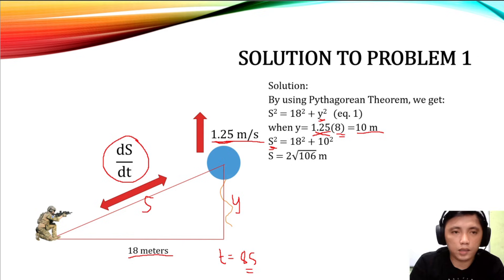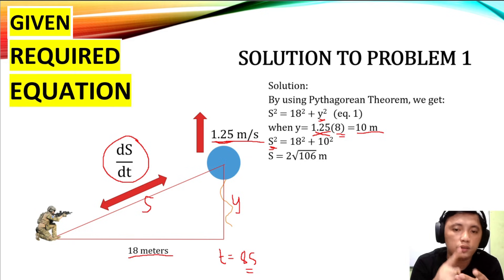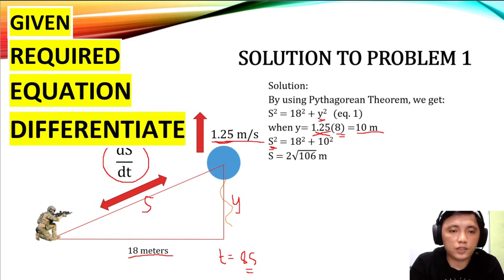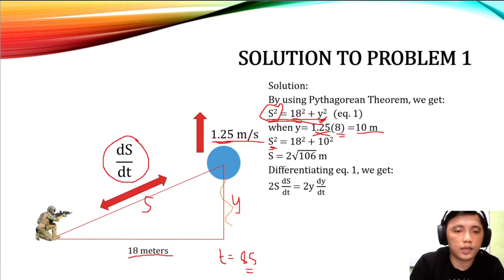The next step is to differentiate the equation with respect to time. Differentiating s squared equals 18 squared plus y squared, by the chain rule this becomes 2s ds/dt equals 0 plus 2y dy/dt. So differentiating equation one we get 2s ds/dt equals 2y dy/dt.